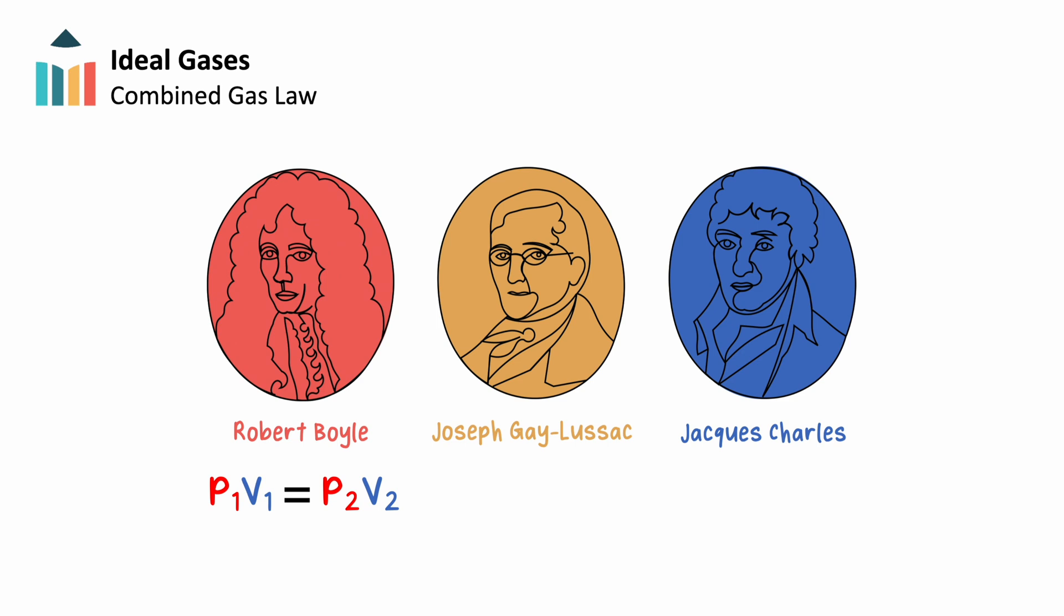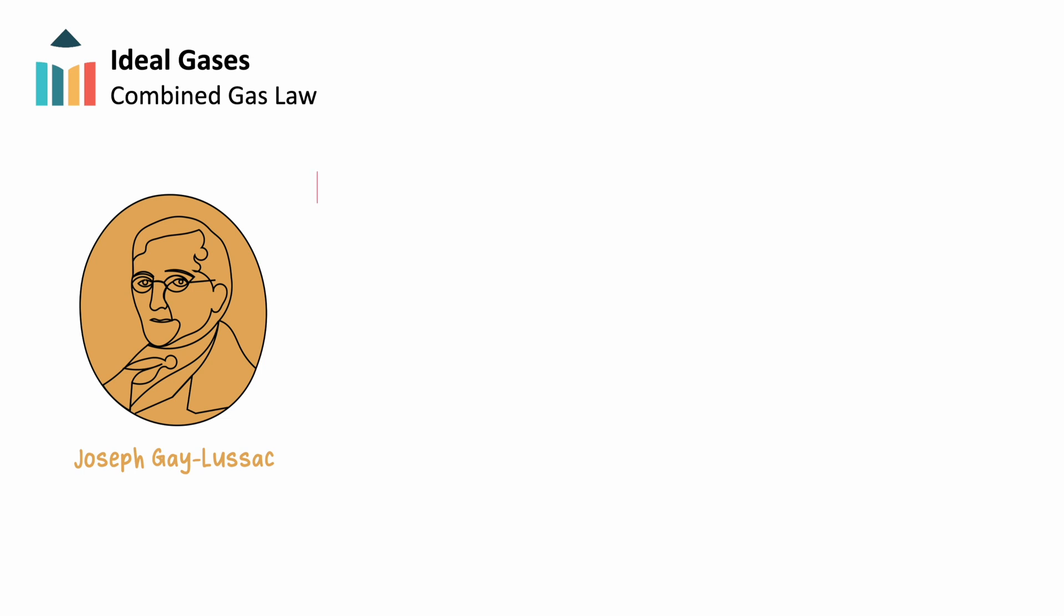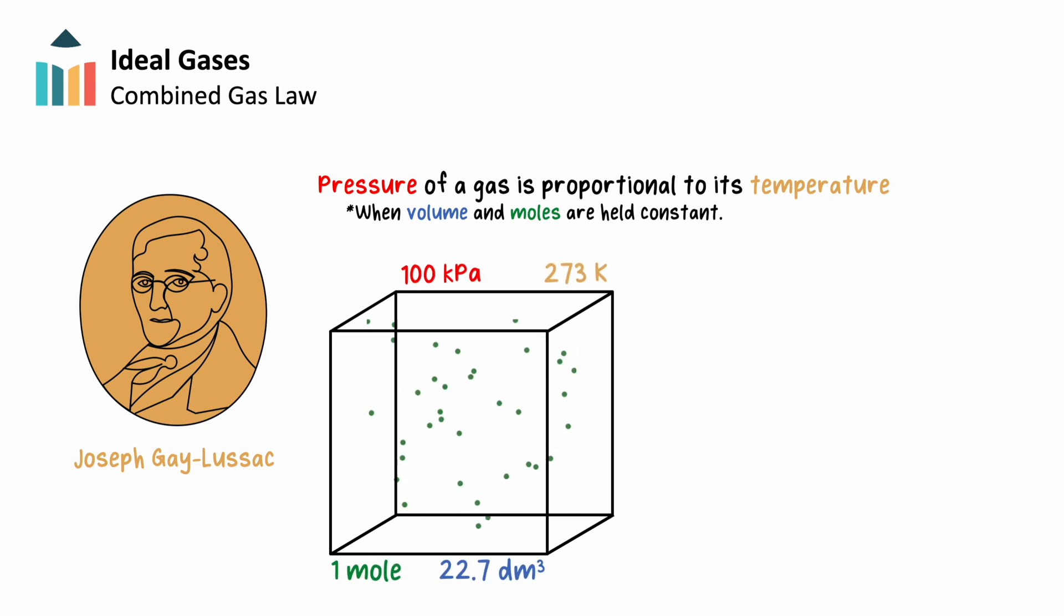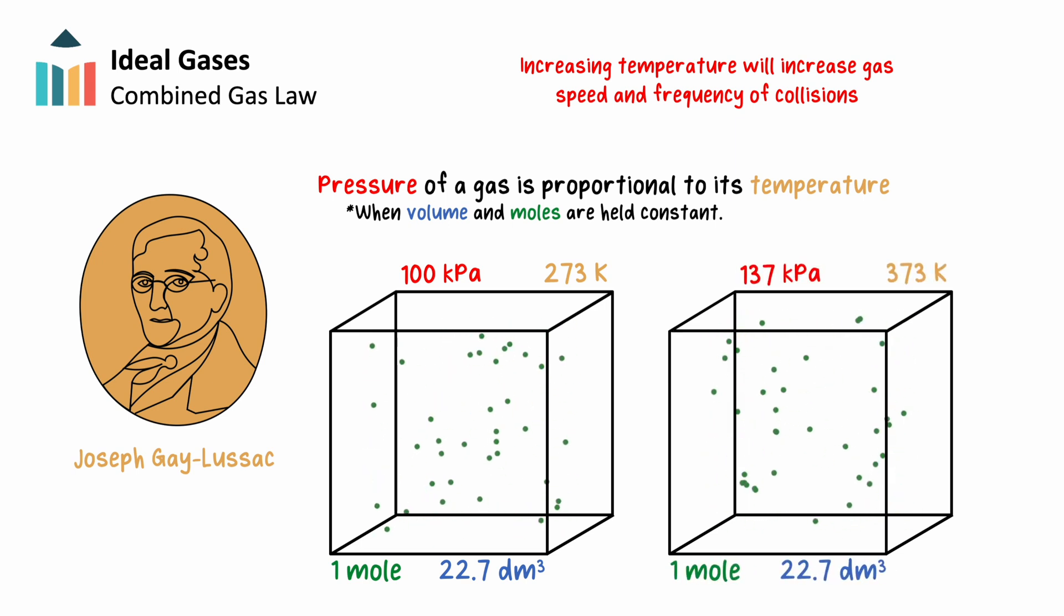Gay-Lussac's law states that the pressure of a gas is directly proportional to its temperature in a rigid container where volume and moles are held constant. The speed at which gases move is in part determined by their temperature. Therefore, increasing the temperature of a gas, for example, would cause those particles to move faster, leading to more frequent collisions with their container, and therefore create a higher pressure.